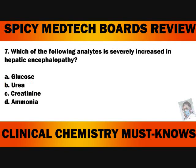Methotrexate is an anti-cancer drug and it is also an immune suppressant. Number 7. Which of the following analytes is severely increased in hepatic encephalopathy? A. Glucose. B. Urea. C. Creatinine. Or D. Ammonia. The answer to number 7 is letter D, Ammonia.